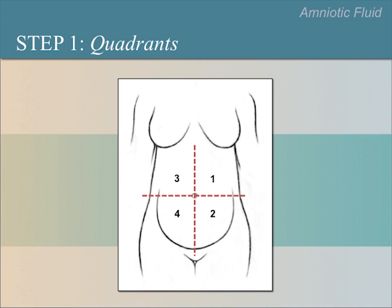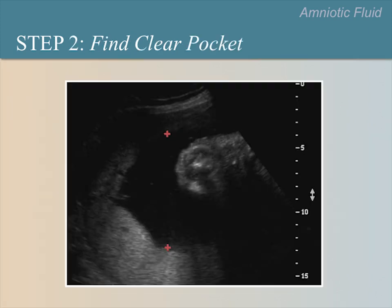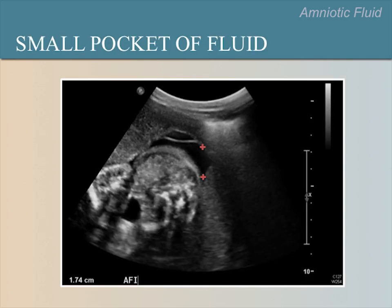The first step in measuring the AFI is to visually divide the uterus into four quadrants in your mind. Next, identify the deepest pocket of fluid in each quadrant that does not contain cord or fetal parts — this should be a solid black area on ultrasound. Notice that if we connect the calipers with a line, the line is straight up and down or vertical. This is a cross-section of the abdomen with just a small pocket of fluid labeled with red calipers.